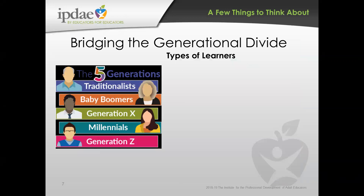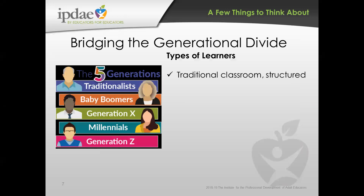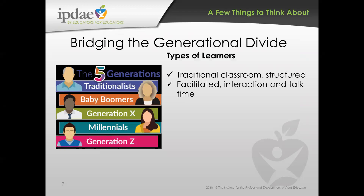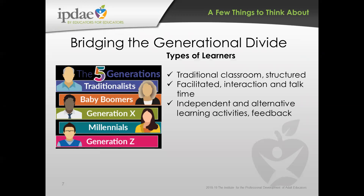With those different generations, we really have to look at what type of learner they are and how they learn best. Traditionalists like the structured, traditional classroom — they grew up with rote memorization. Baby boomers love to tell stories and prefer group interaction and discussion; they want to be part of the decision making. Generation Xers are much more independent, prefer alternative learning activities they can do themselves, and like feedback. They were really the first generation that started doing more online skill building.